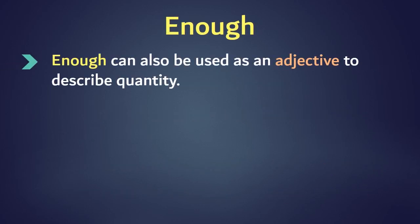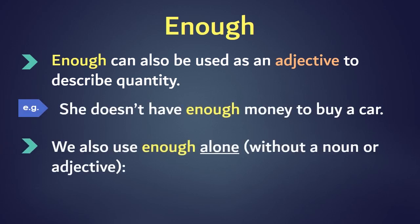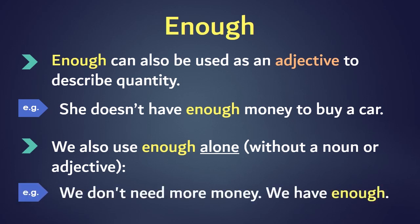Enough can also be used as an adjective to describe quantity. For example, she doesn't have enough money to buy a car. We also use enough alone without a noun or adjective. For instance, we don't need more money, we have enough.